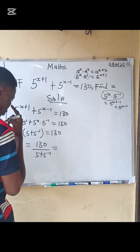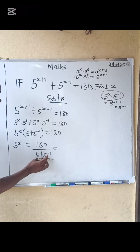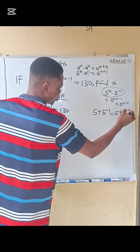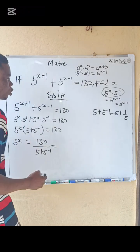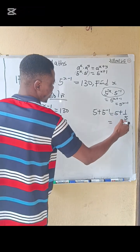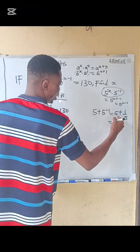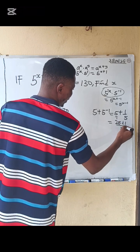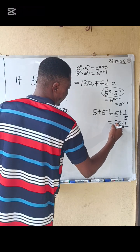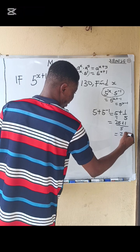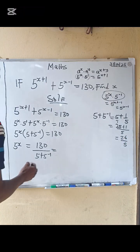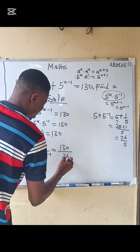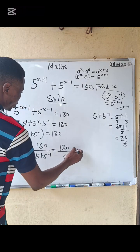Now let's evaluate five plus five to the minus one. Five to the minus one equals one over five. Clearing the fraction: five times five is 25, plus one over five gives us 26 over 5. So five to the x equals 180 divided by 26 over 5.